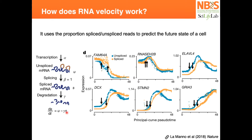Imagine that you have a cell. It starts producing an RNA — a differentiation factor. The first RNA being produced is the unspliced RNA that has the introns. After a couple of minutes, you have the spliced version of that RNA in that same cell. So which cell comes before or after? If you pick two cells, one has more unspliced and the other has more spliced, the unspliced version comes first because it's just starting to produce that RNA.